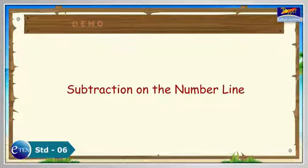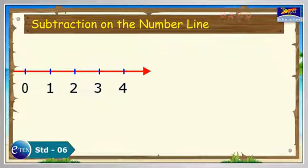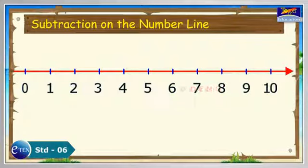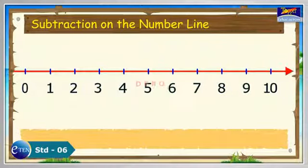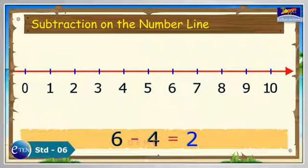Subtraction on the number line. Subtraction of two whole numbers can be shown on the number line. Let us find the difference of 6 and 4. 6 minus 4 equals 2. We subtract 4 from 6 and get the number 2, which is smaller than 6.